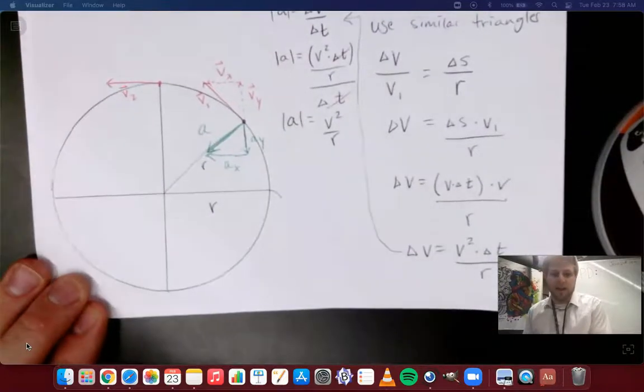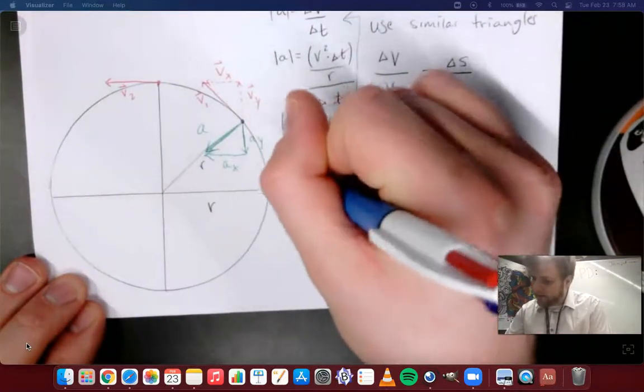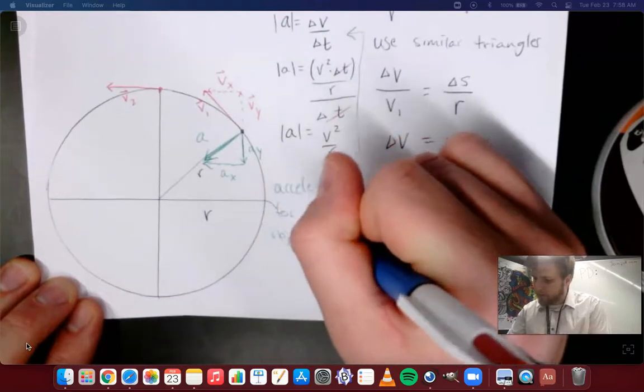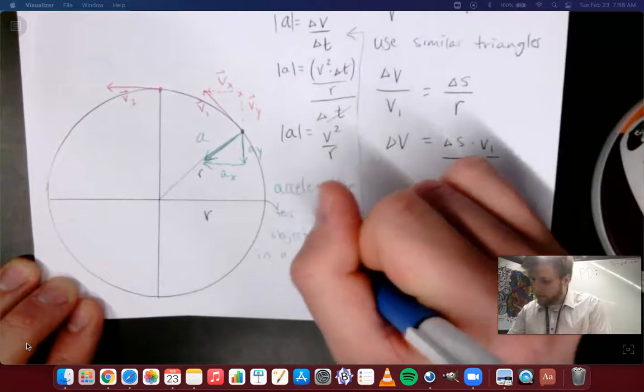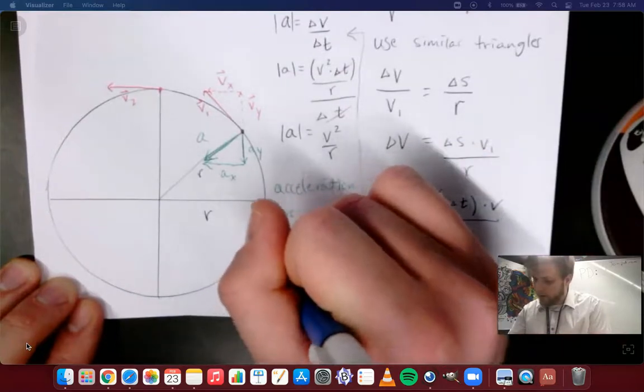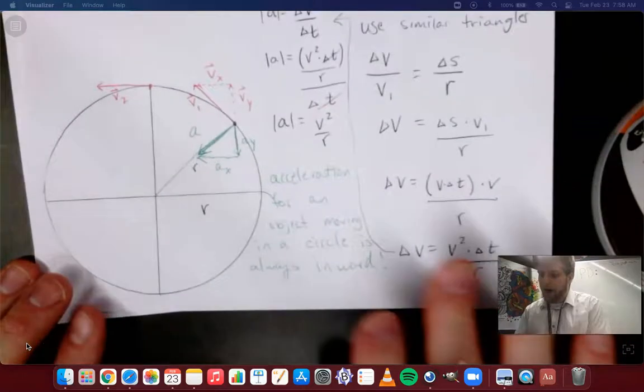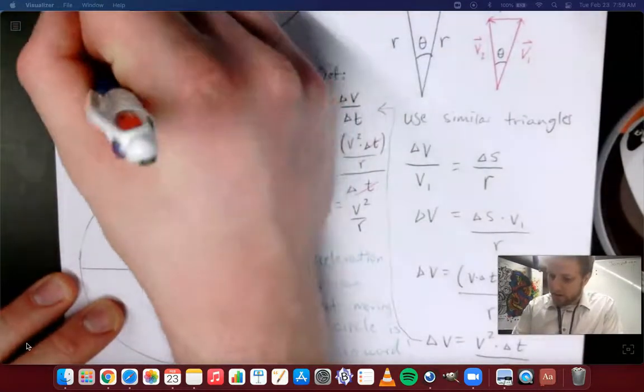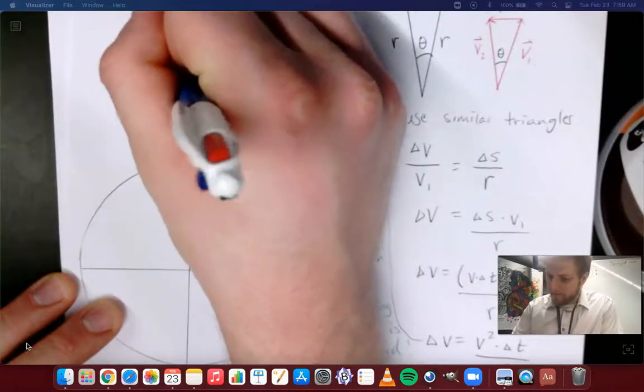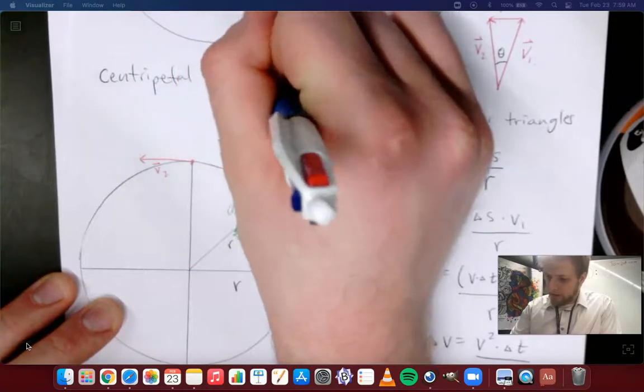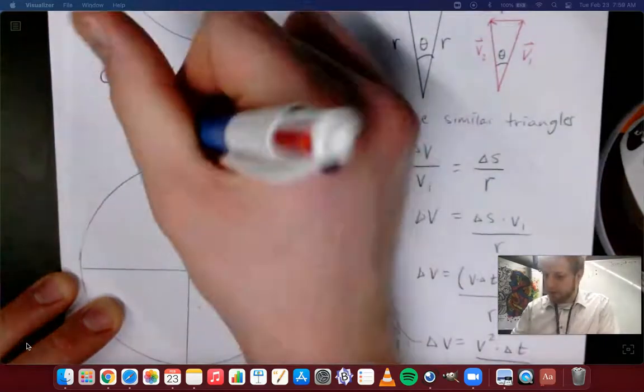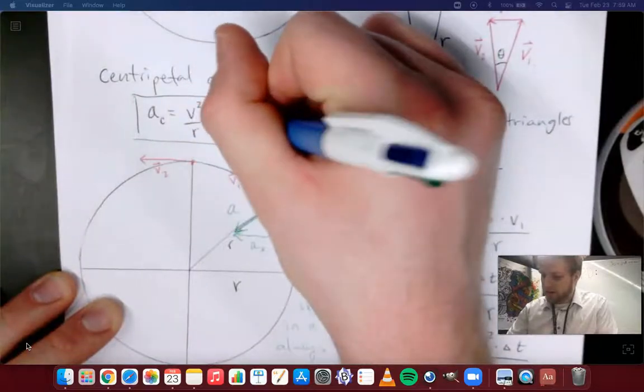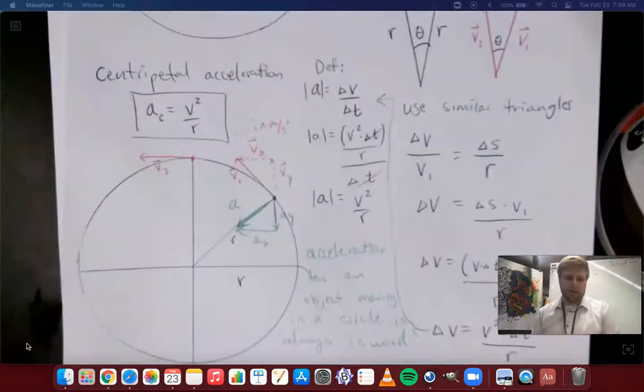So which direction is the acceleration acting? The acceleration for an object moving in a circle is always inward. So I will put up, just to finish this off, the acceleration of something moving in a circle called the centripetal acceleration is AC for centripetal, is v squared over r. And it's measured in meters per second squared. That's all we got on this one, folks.